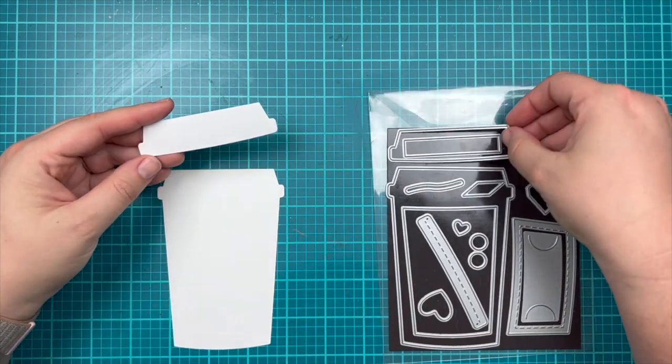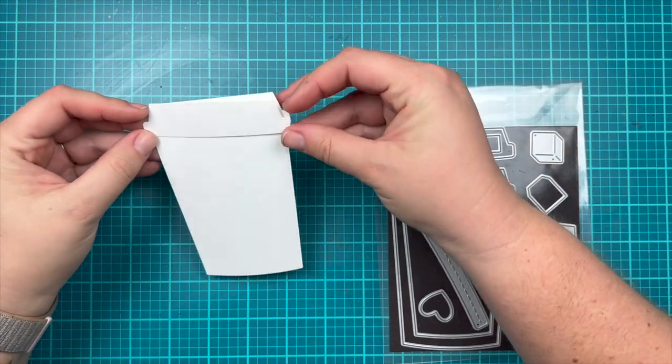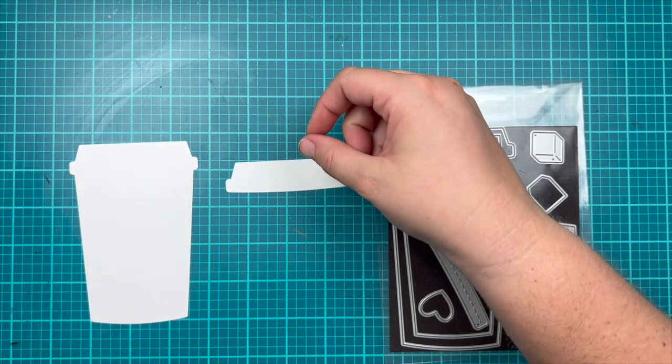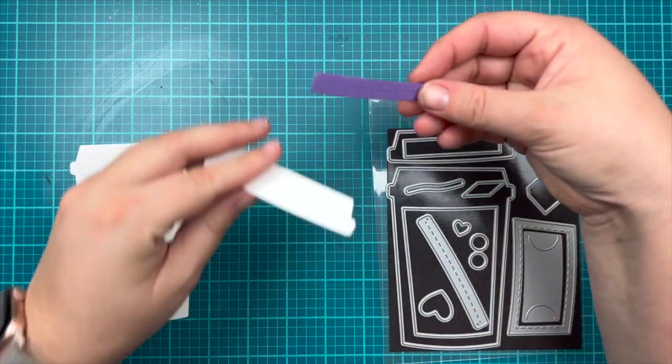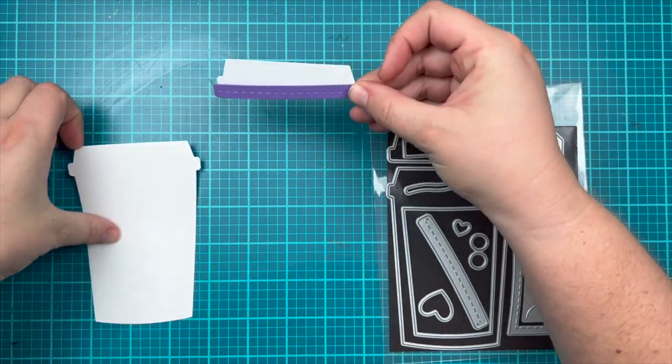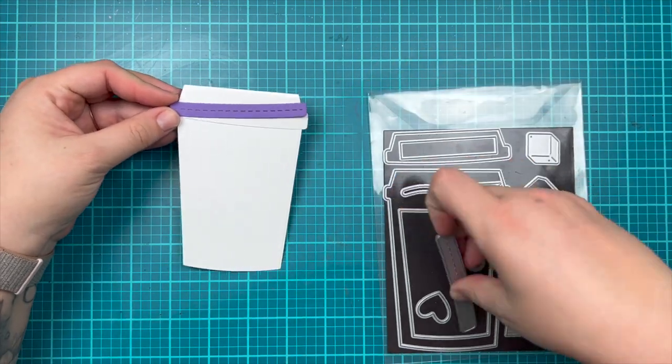The lid is also a separate die cut, which is really great if you want to glue on a different color lid, especially if you're doing patterned paper for your die cutting. Then there's also a curved piece with a fun dash line that will make the edge of the lid or the edge of the cup.